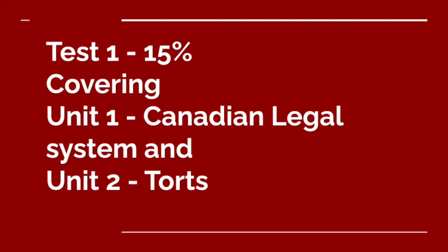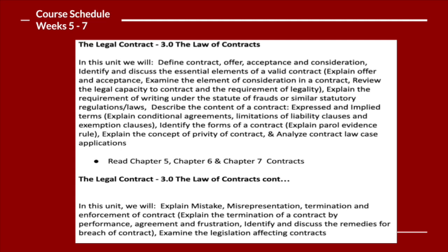Then we're going to do our first test — a multiple choice test worth 15% covering units one and two. In weeks five through seven, we're going to look at contract law, which is a big aspect of business administration law. We'll look at what exactly a contract is, the components of a contract — offer, acceptance, and consideration — the essential elements for a valid contract, how it can be enforced, legal capacity, legality in terms of what we can actually contract for, what contracts need to be in writing, and how things like the Statute of Frauds and government statutes influence contracts.